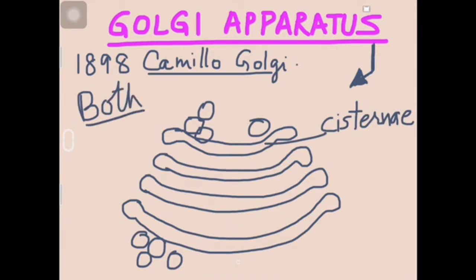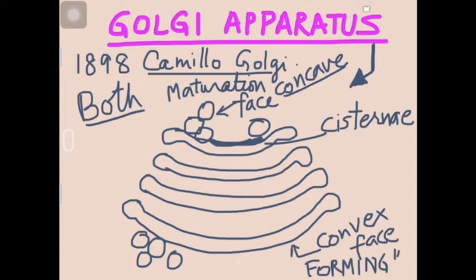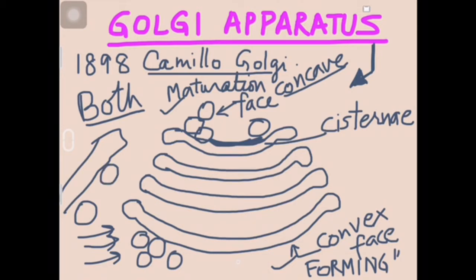Golgi apparatus, also called Golgi complex or Golgi bodies, is found in both plant and animal cells. In plants it is also called dictyosome. It has two faces: convex and concave. On the forming face, new materials keep getting added — vesicles pinch off from the endoplasmic reticulum and join here.